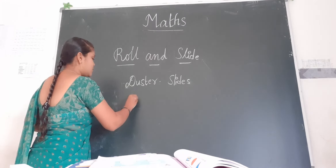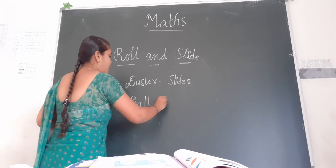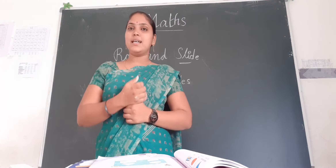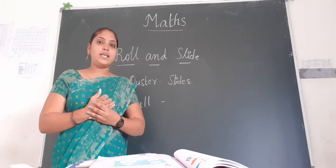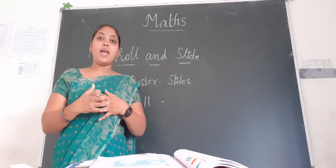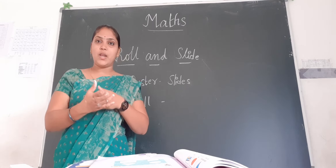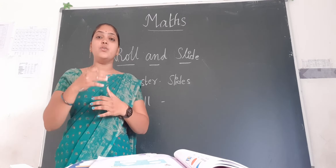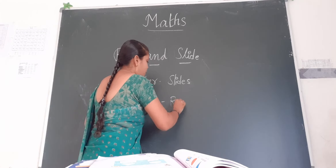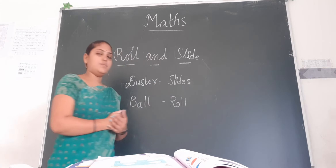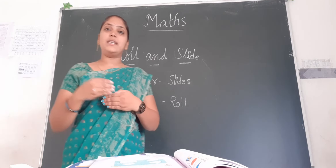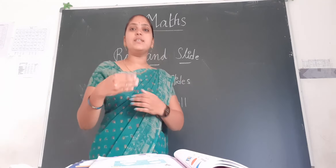Now one question children — ball. Can the ball slide or roll? What type of surface does a ball have children? The ball has a curved surface. So it rolls. Objects that have a curved surface roll, and objects that have a flat surface slide.